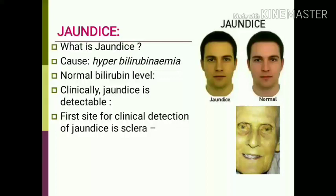Hello friends, today we will discuss about jaundice. What is jaundice? It is yellowish discoloration of skin, sclera and mucous membranes. The cause of jaundice is due to increased bilirubin concentration, i.e., hyperbilirubinemia.